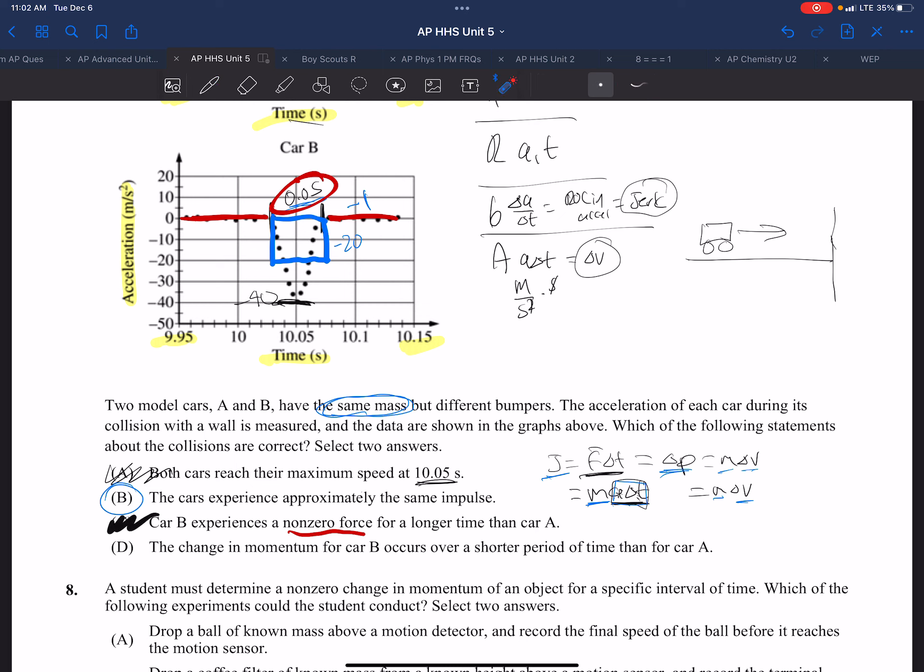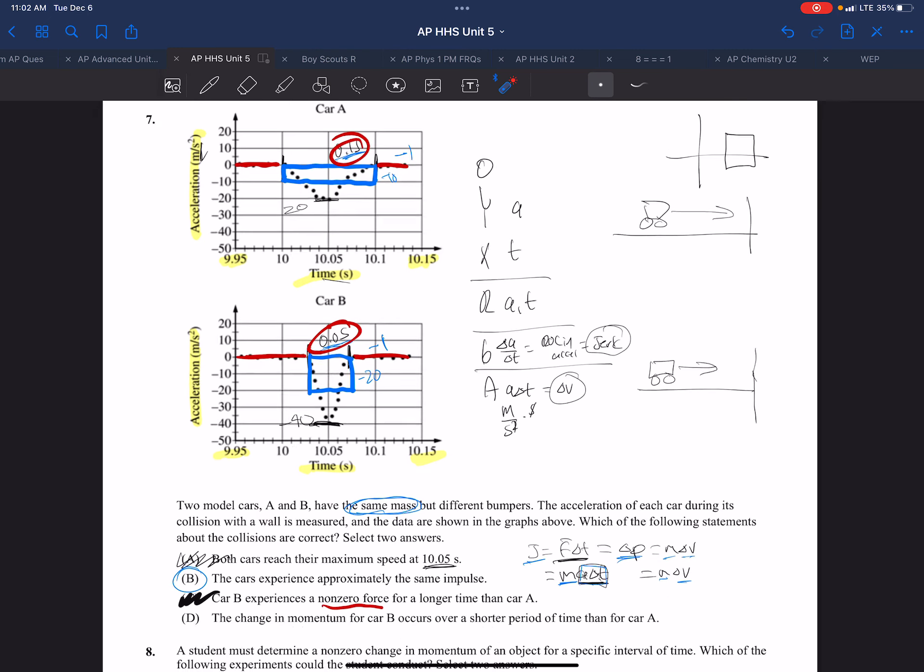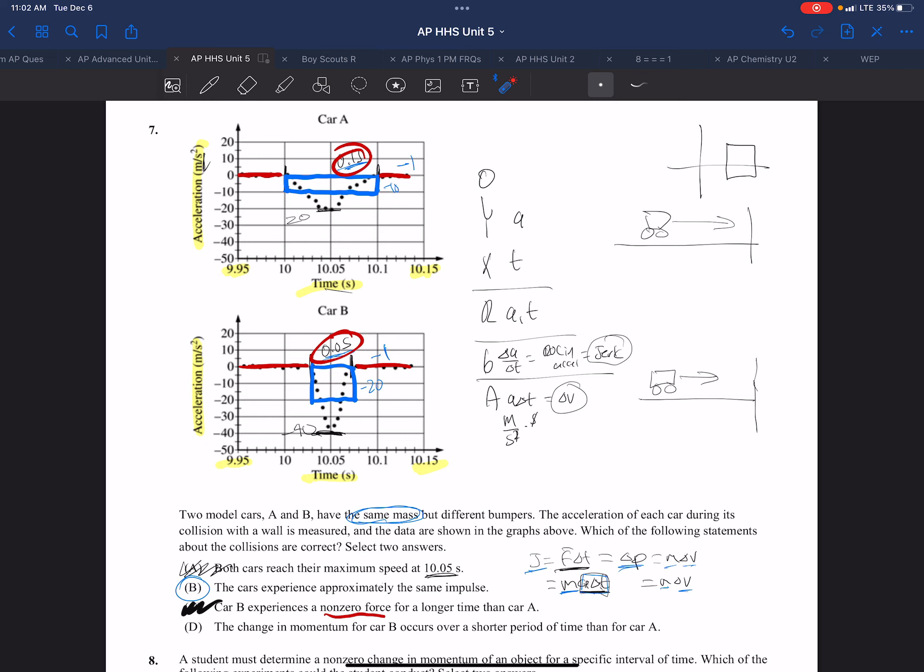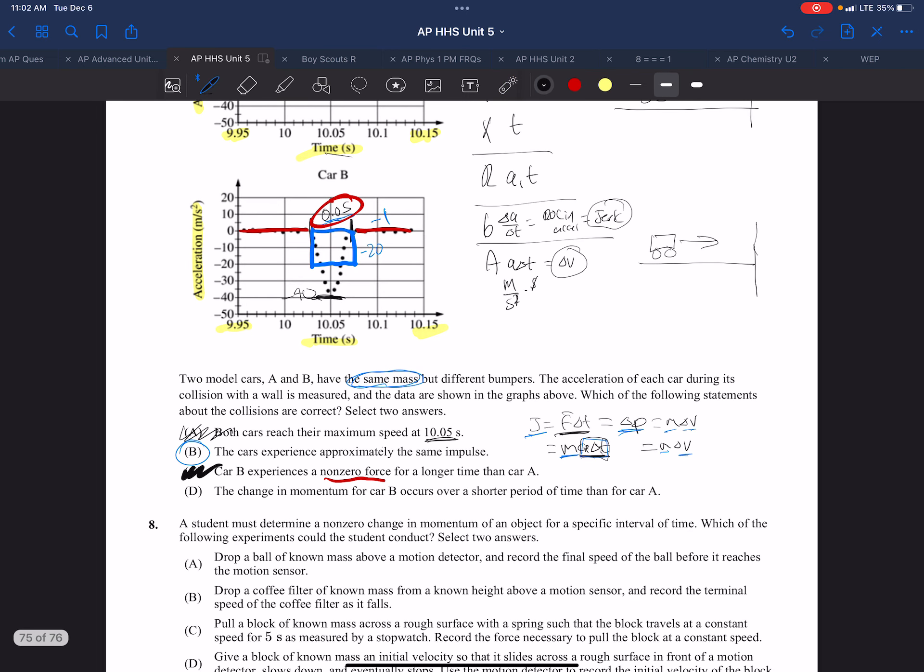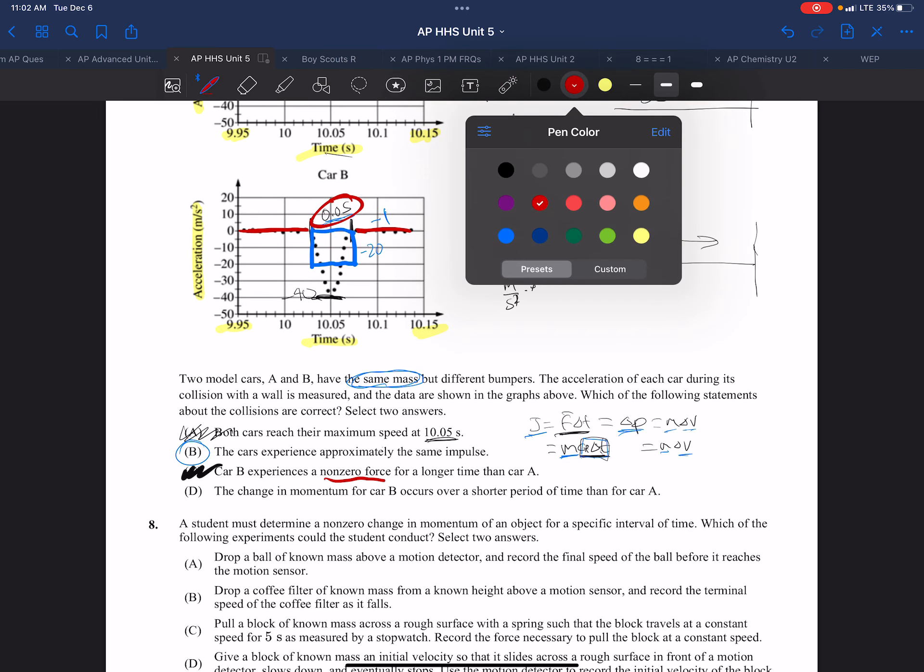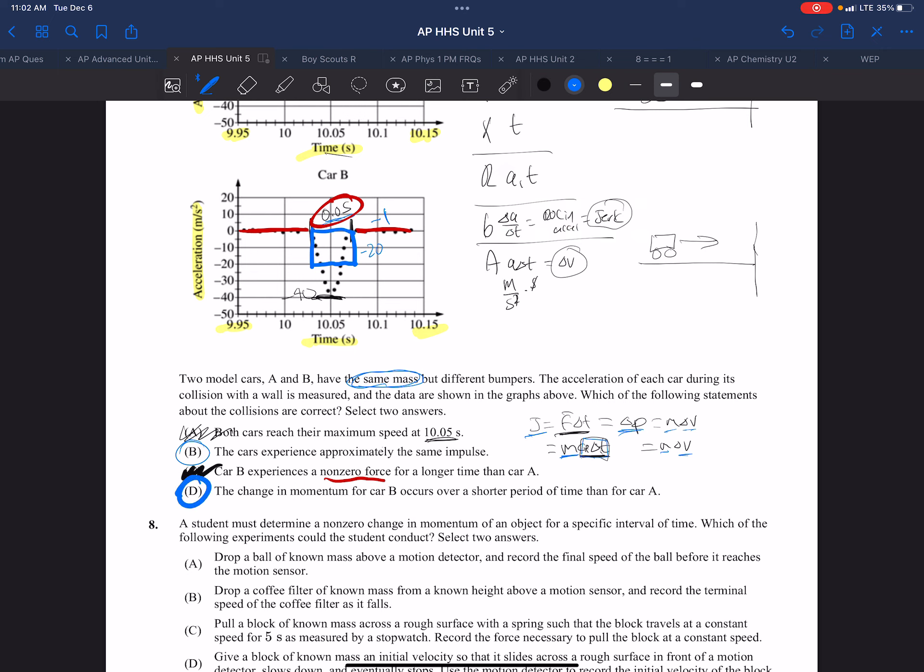And then we look at the next one. The change in momentum for B over a shorter period of time than A. And you can see shorter period of time than A, thus choice B. Choice D, excuse me. So our two choices are B and D.